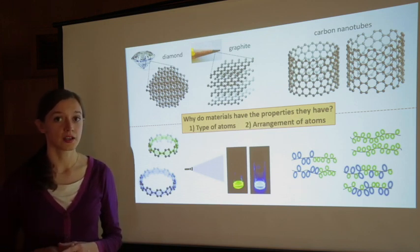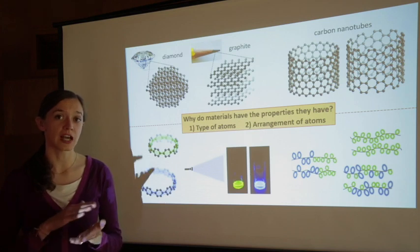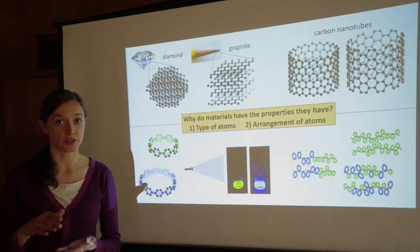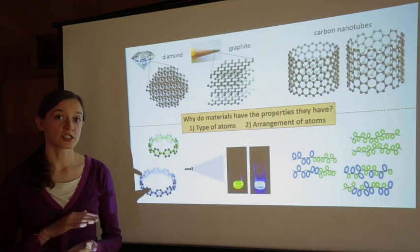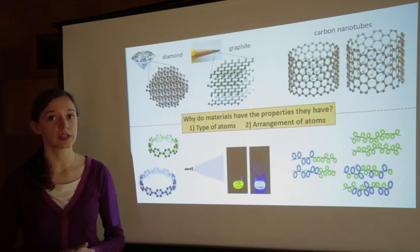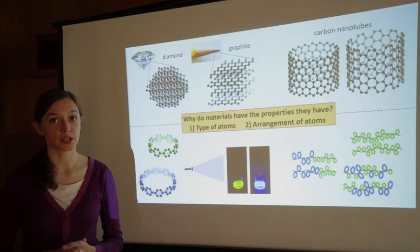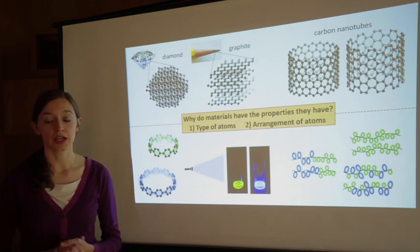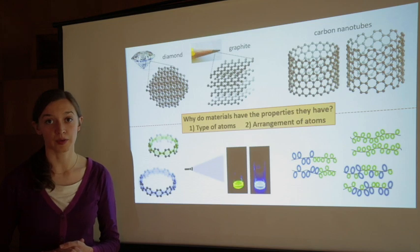In graphite, on the other hand, carbon atoms are connected to each other in flat sheets that are stacked on top of each other. The connections among carbon atoms in a sheet are very strong, but the sheets are held together relatively weakly. This is why when you rub a pencil on paper it leaves a mark. This is caused by graphite sheets sliding and coming apart from each other.